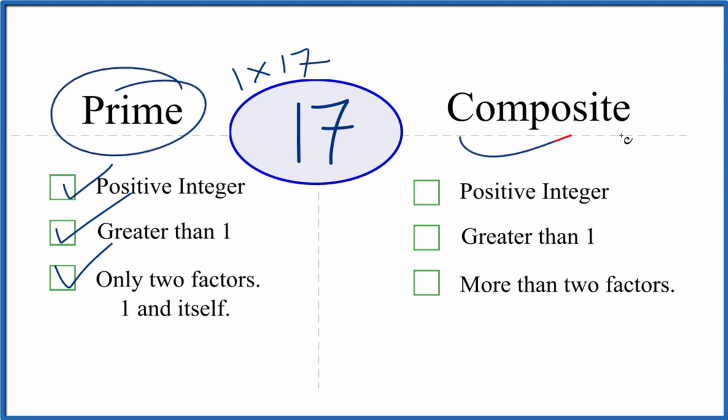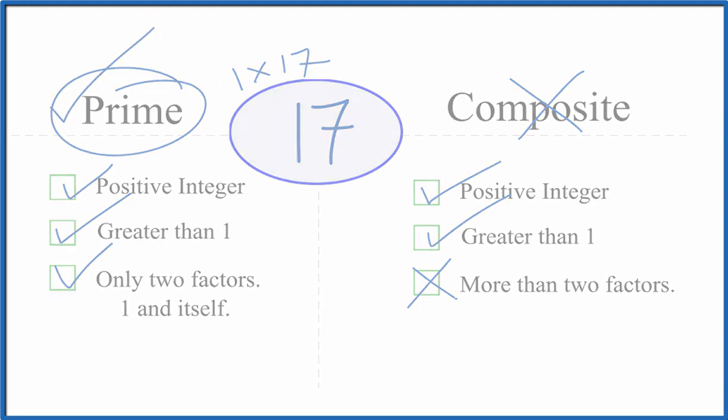But is it a composite number? It's a positive integer, it's greater than 1. But are there more than two factors? We just said that there are only two factors. So 17 is not composite. It's a prime number. This is Dr. B. 8, thanks for watching.